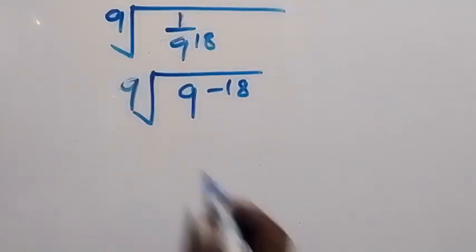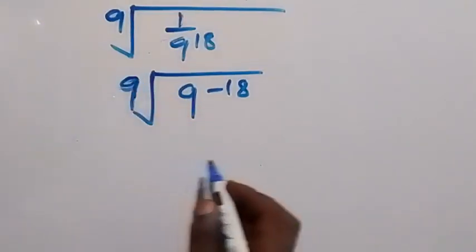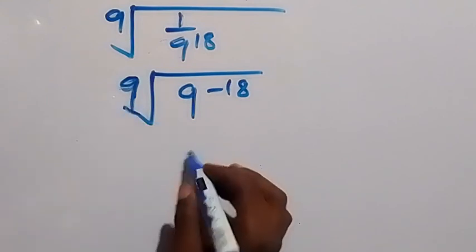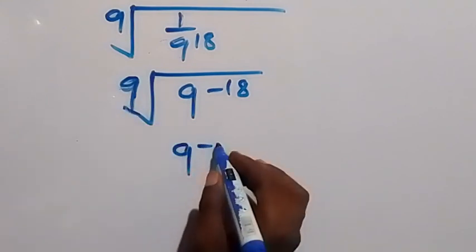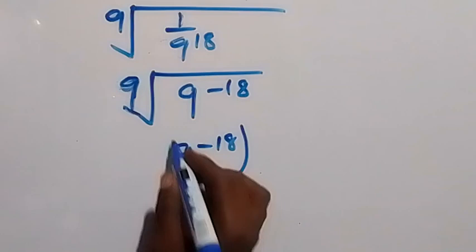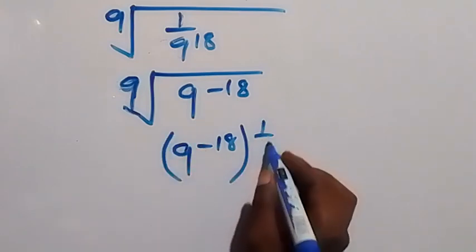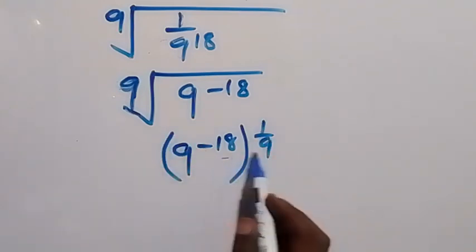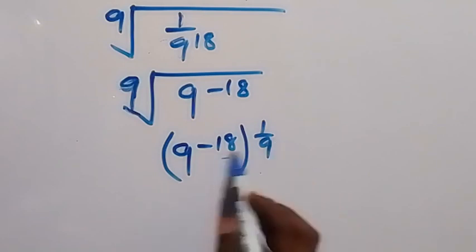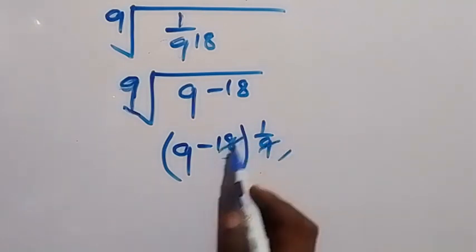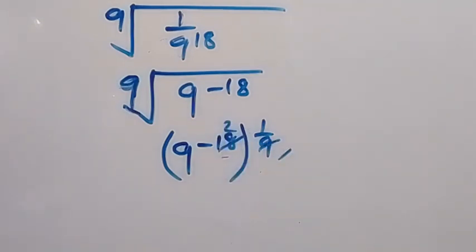And then from here, this ninth root can be written as raised to power 1 over 9. From here, since this power is multiplied, we multiply the exponents.